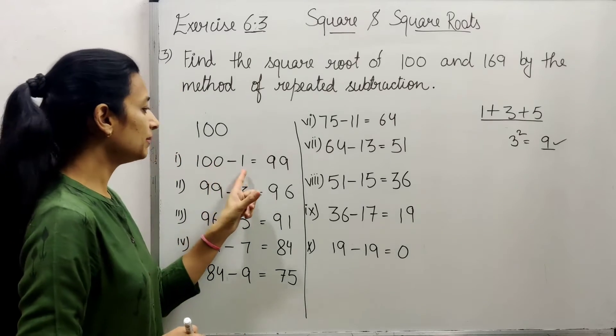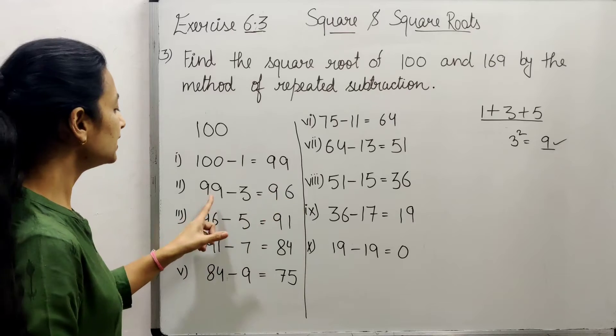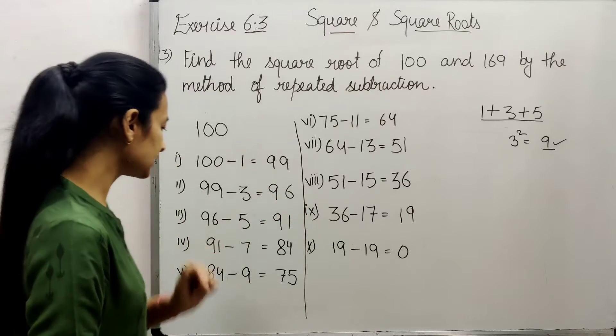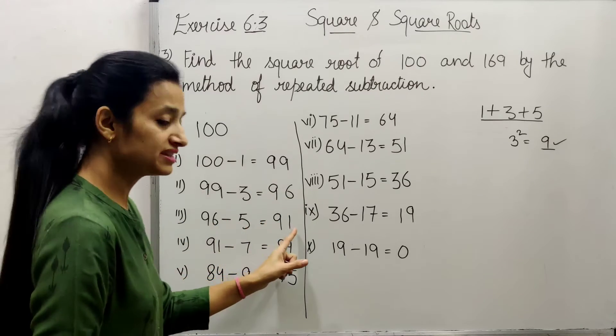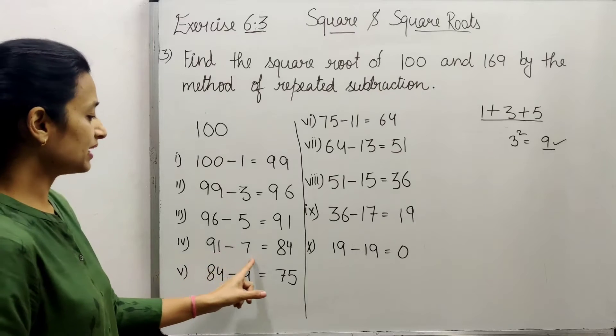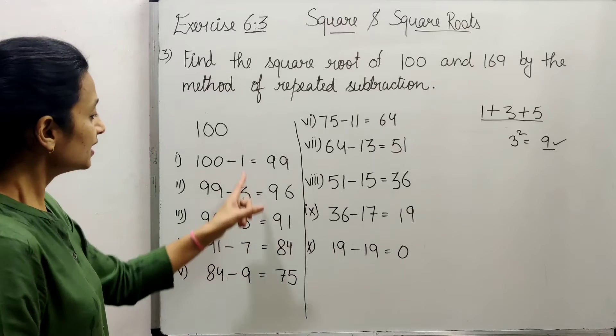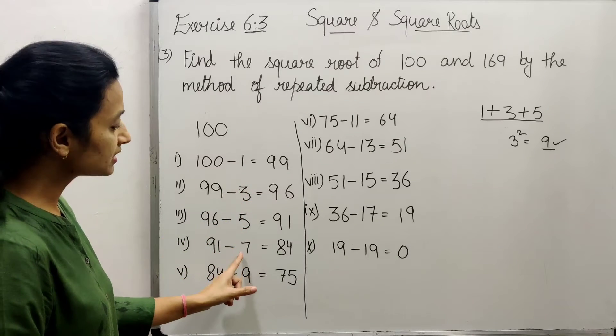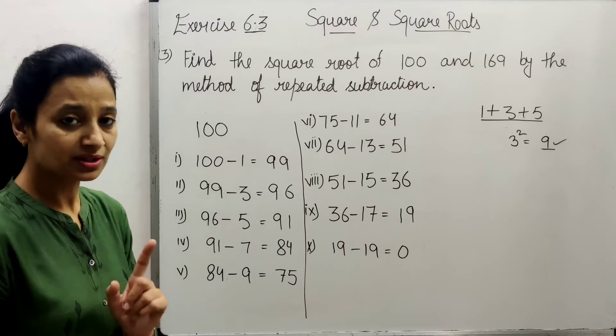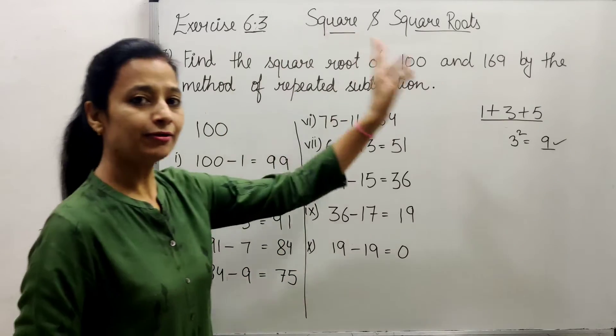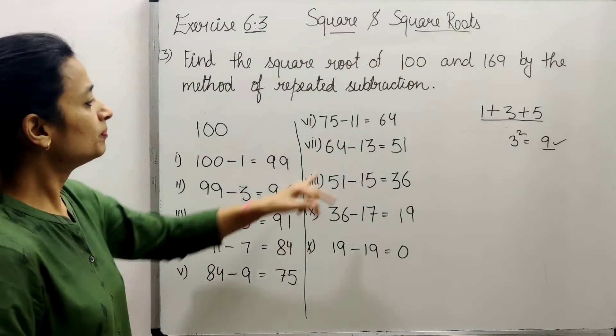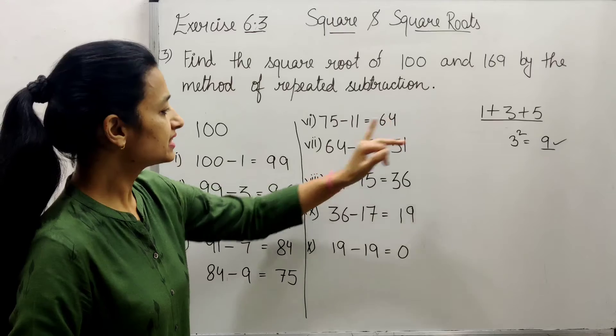So here 100 minus 1 is 99, then 99 minus 3 is 96, 96 minus 5 is 91, 91 minus 7 is 84, 84 minus 9 is 75. All of these are odd successive natural numbers. 75 minus 11 is 64.